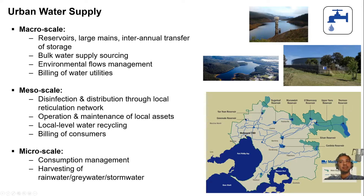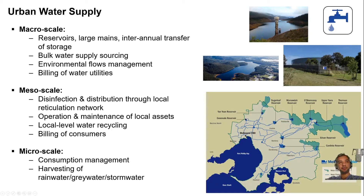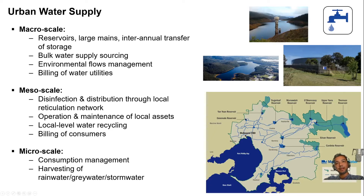Melbourne, Australia is a very good example for water supply. I'll take several examples from Melbourne, having worked there for 11 years. The water supply is managed at three different scales. At the macro scale, water is sourced from natural catchments — reservoirs that Melbourne Water, the water authority, manages. These protected areas ensure catchment water remains fairly clean, minimizing treatment effort.